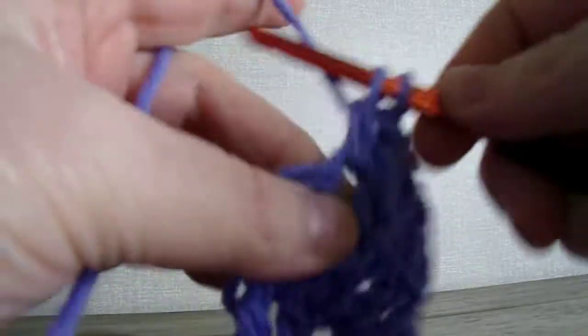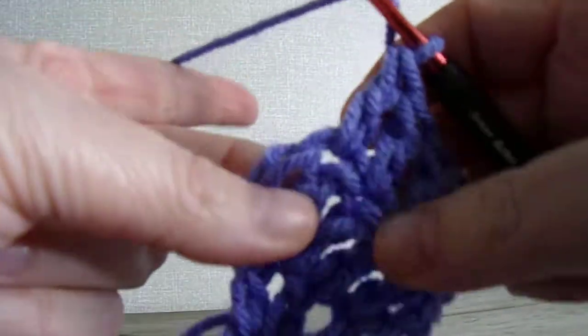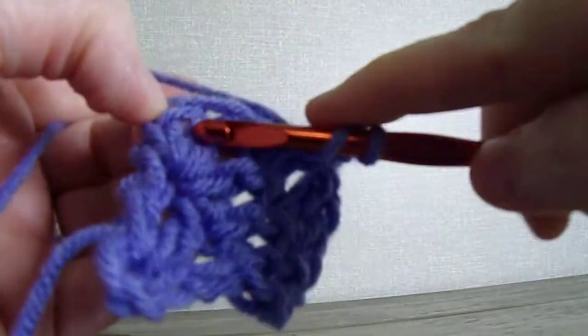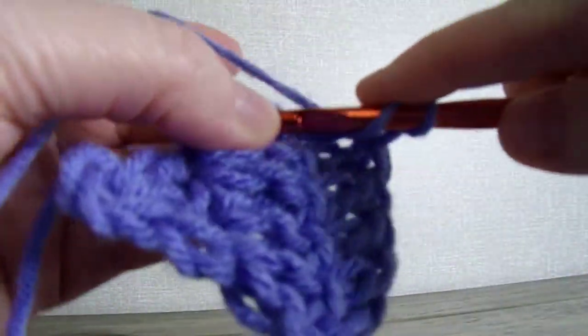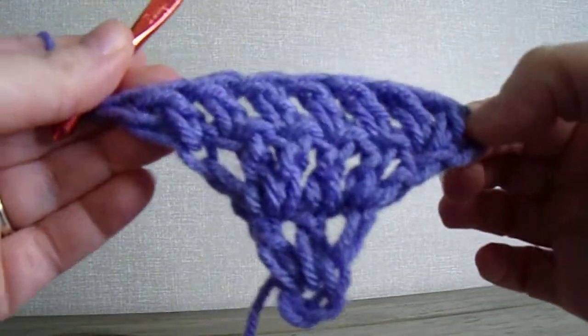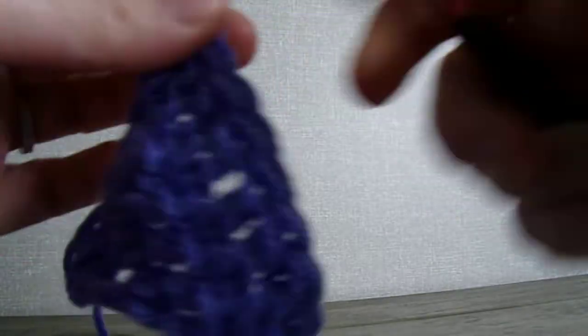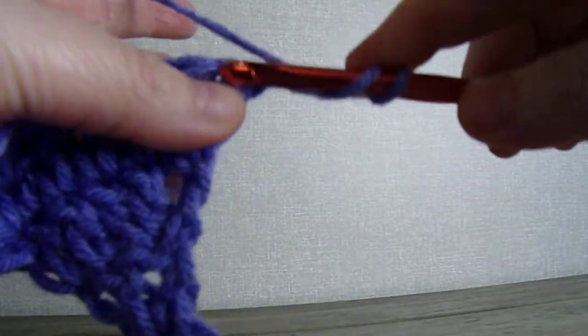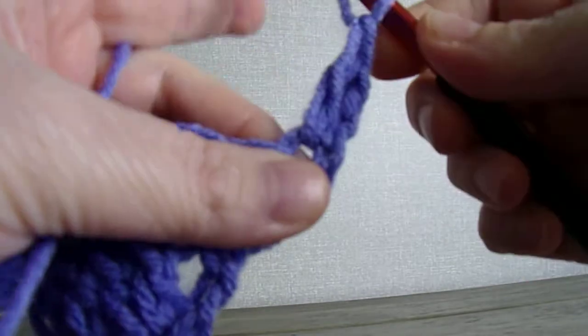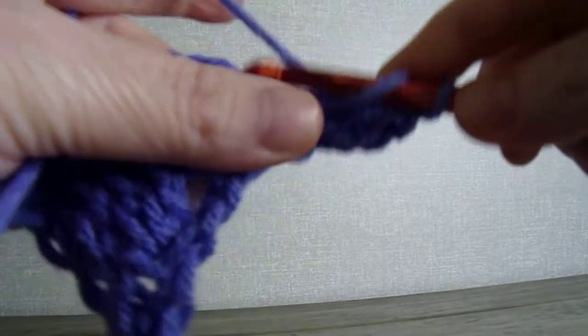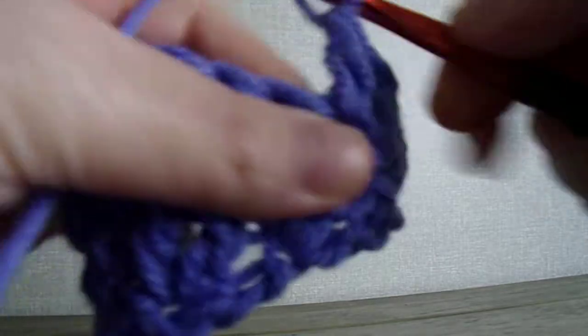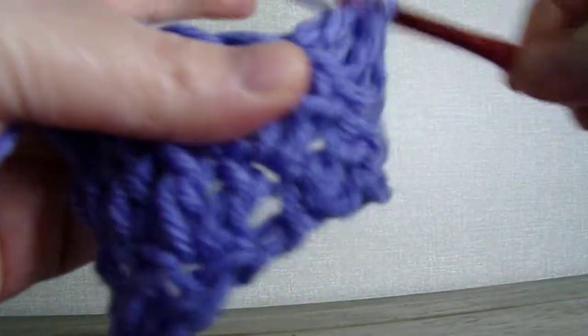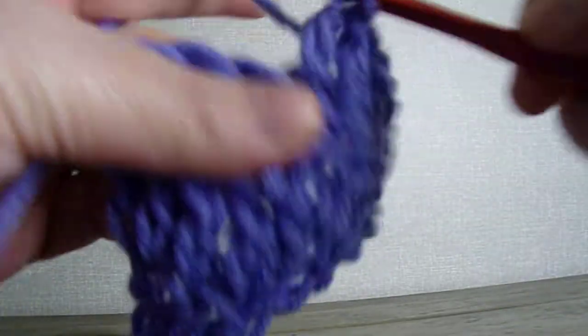When you reach the very last stitch, place two double crochets, and that's going to make your increase. It's already starting to grow. Chain 2 to turn your work, two double crochets in the very first stitch. Then you want to double crochet in every stitch across until we get to the very last stitch, and in that stitch place two double crochets.